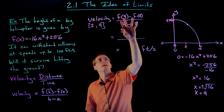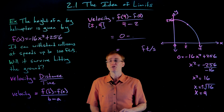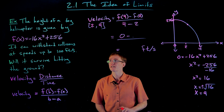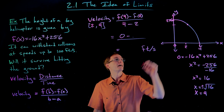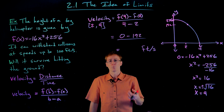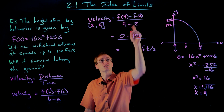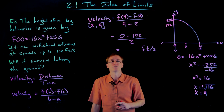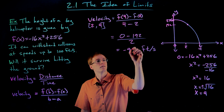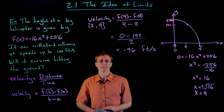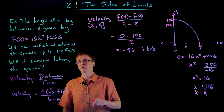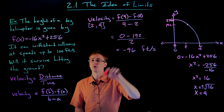We need to evaluate these f values. F of four is still zero. F of two is found by plugging two into our function: negative 16 times two squared plus 256, which gives 192 feet. So the helicopter falls from 192 feet to the ground over two seconds. Dividing negative 192 by two, the average velocity over this two-second interval is negative 96 feet per second — much closer to 100, but still not there.